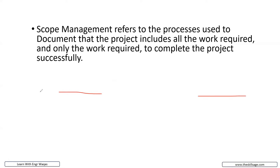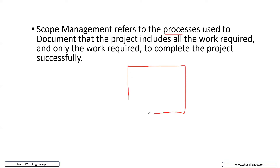So every time I use the word 'process,' your mind should pop up: okay, input and output. Scope management is a process — it means we require inputs and outputs. This process is actually dealing with how to document that all the project work should be there. We need to add all the work required to complete that project, and we don't need to write anything that is not required. For example, I'm going to construct a building.